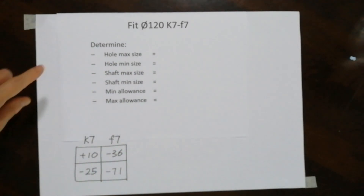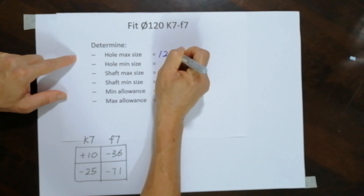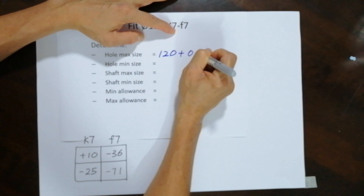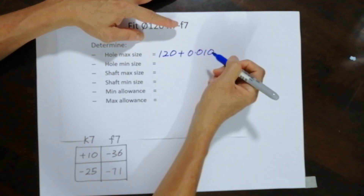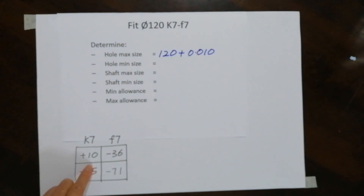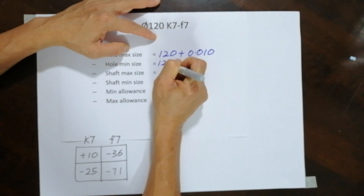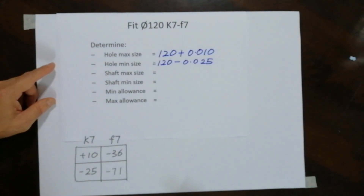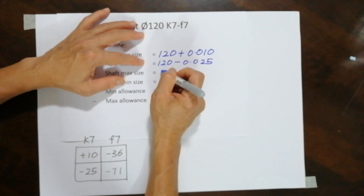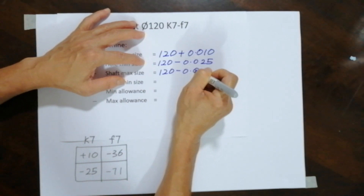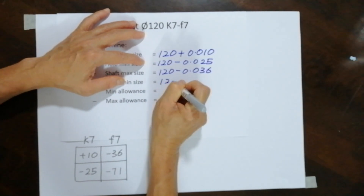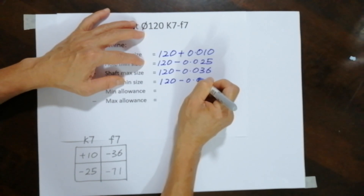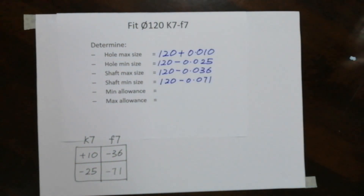Once we have the numbers, the rest is very mechanical. For the hole maximum size, we have 120 plus 0.010, which gives plus 0.010, and the other one is minus 0.025. For the shaft maximum size, which is minus 36, we have 120 minus 0.036, and the shaft minimum size is 120 minus 0.071.